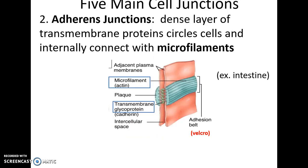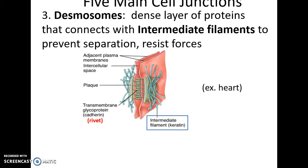There are adherens junctions. These have dense layers of transmembrane proteins that bind to each other as well as attach to the microfilaments of the cytoskeleton. They act more like Velcro — they hold cells together, but things can pass between them sometimes. Desmosomes are spots with dense layers of proteins that interact with proteins in neighboring cells and bind to intermediate filaments of the cytoskeleton. They're very good at resisting forces and preventing separation — think of them as rivets.